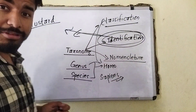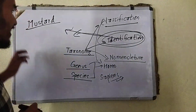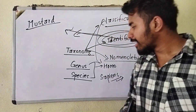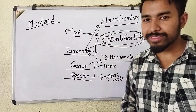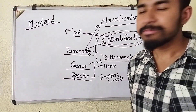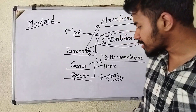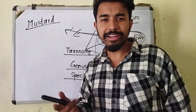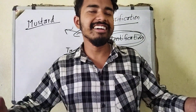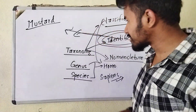Mustard — its scientific name is Brassica campestris. That's a good name. Brassica is the name of the genus and campestris is the species name. Tiger — its scientific name is Panthera tigris. Frog — its scientific name is Rana tigrina. So now these are some scientific names.